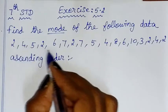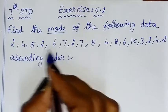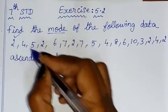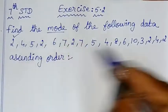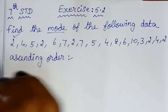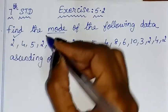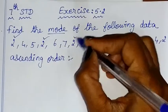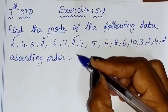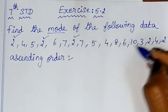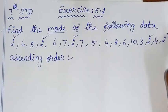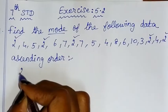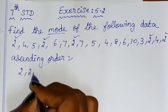First, 2 is the smallest value. Ascending order means small to big. So, how many times does 2 appear? It repeats 5 times. So 2 appears 5 times.